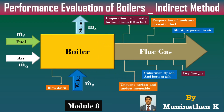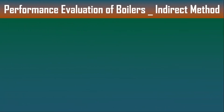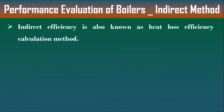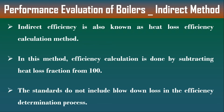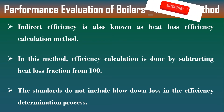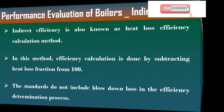That is why we are moving to the indirect method. The indirect method is also known as the Heat Loss Efficiency Calculation Method. This method is calculated by adding all heat loss fractions and subtracting that from unity. In this method, the blowdown heat loss will not be considered as per American standards. Now we will discuss the various heat losses that occur in a boiler.